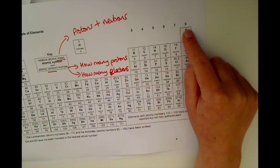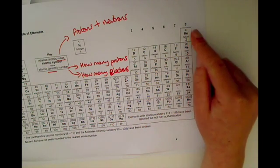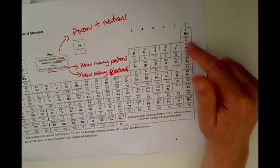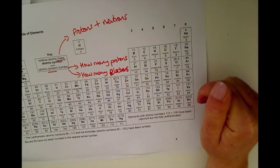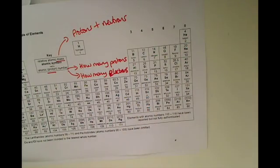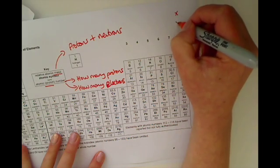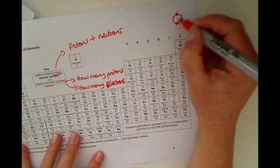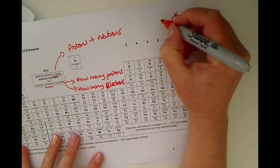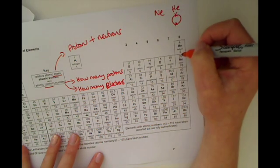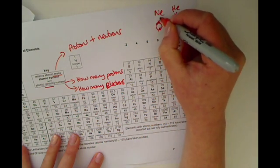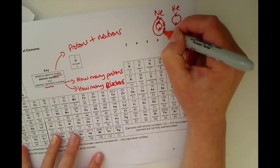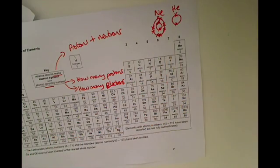The final thing to notice is that we have something called group zero. Group zero is called group zero because it contains elements with a full outer shell. We can't call it group eight because not everything has eight electrons in its outer shell — for example helium has just two electrons and its outer shell is full because it only has one shell. But neon, for example, is in group zero as well because it has a full outer shell — with eight electrons in it — having ten electrons altogether: two in the inner shell and eight in the outer shell.